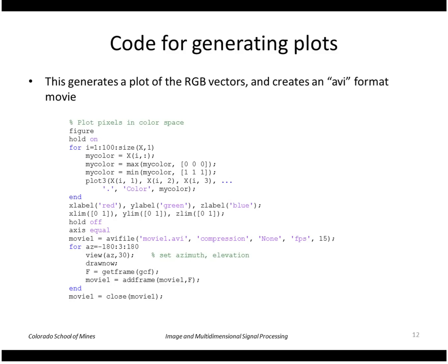If you want to see how I generated these plots and those movies, this code does that. Here is the collection of vectors x; I subsampled every 100th pixel just to reduce the number of points, and used plot3 to plot each point using its own RGB values as the color. I created a movie using the AVI file command, set the view azimuth and elevation, called get frame to capture each rendered view, and then called add frame to add it to the movie, and finally closed the movie.